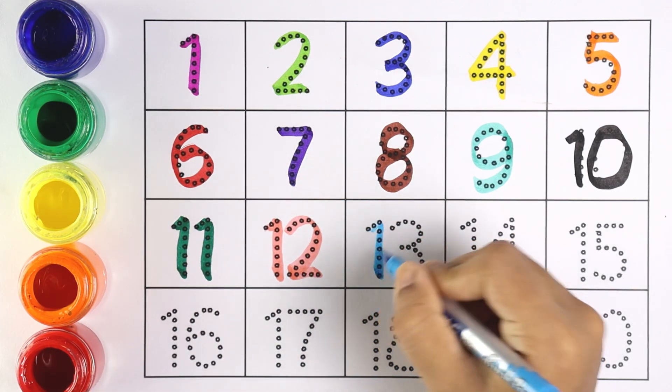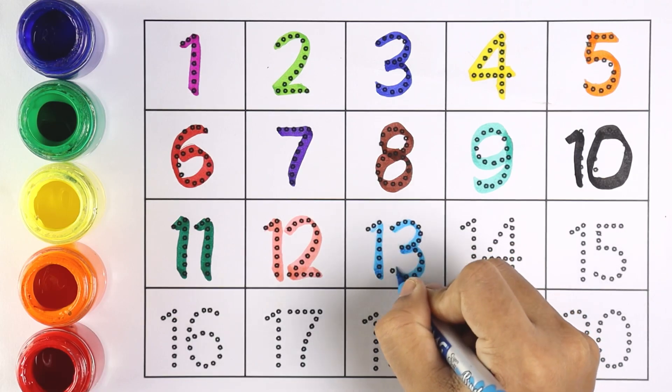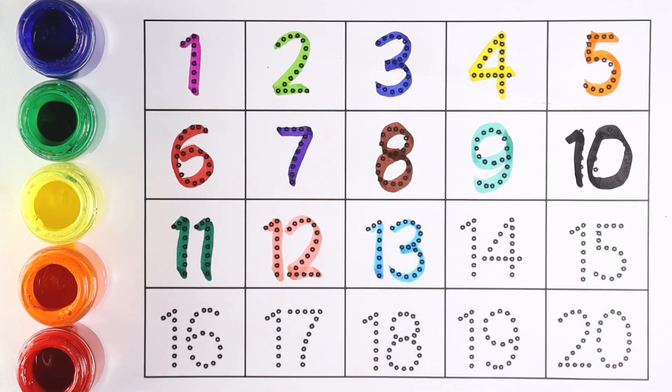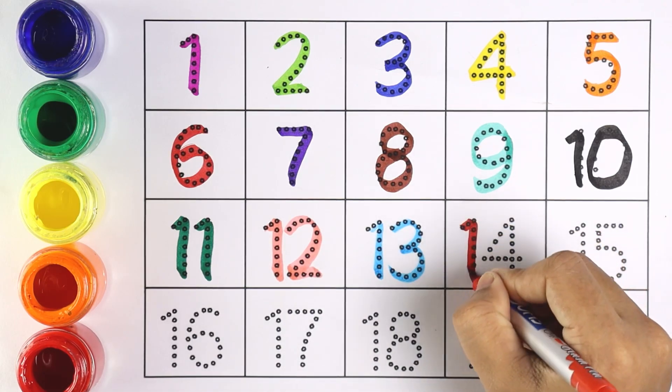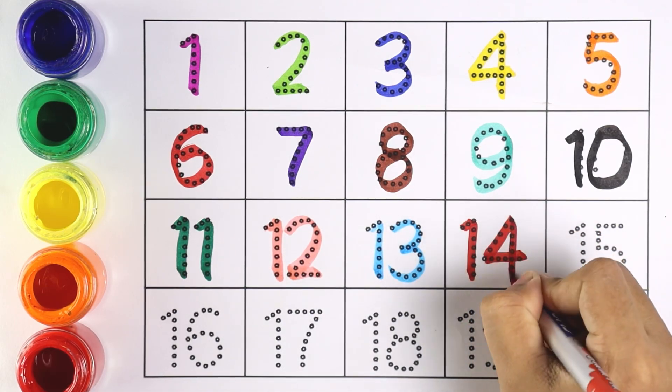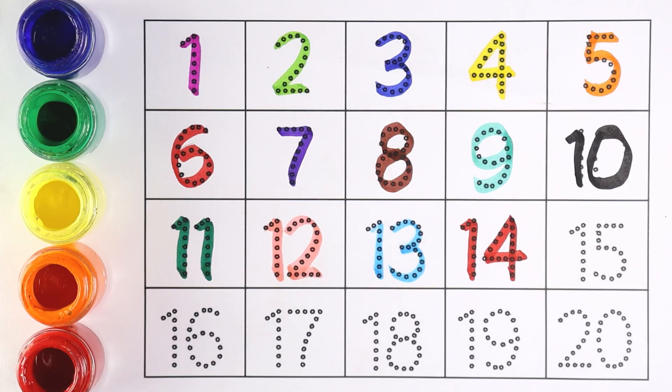Let's move on to number 13. 1 and 3 makes the number 13. Number 13. Number 14. 1 and 4 makes the number 14. Number 14.